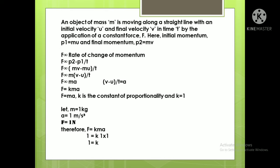Removing the proportionality sign, we introduce a constant k, and k is taken as 1. So F = ma. Why is k equal to 1? If mass is 1 kg, acceleration is 1 m/s², and force is 1 Newton, then from F = kma: 1 = k × 1 × 1, so k = 1. This is the mathematical formulation of the second law of motion. Note this down — it's very important.